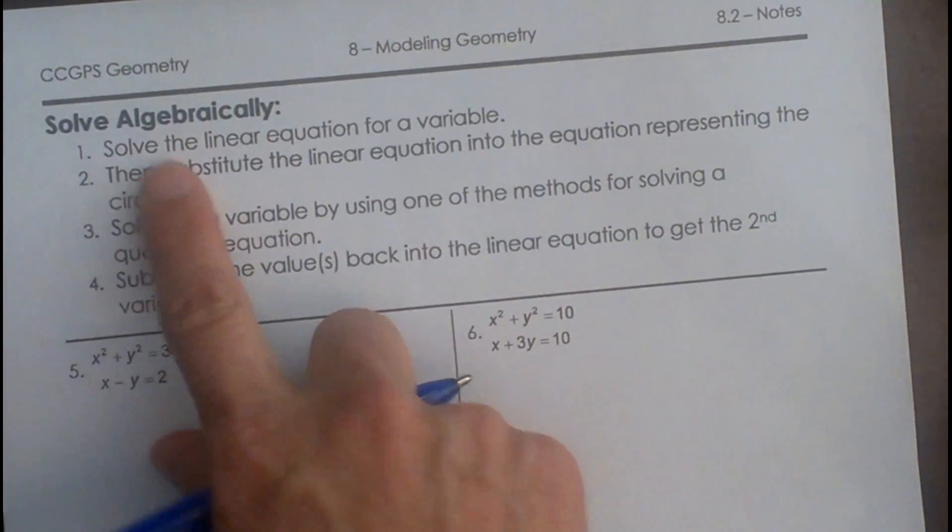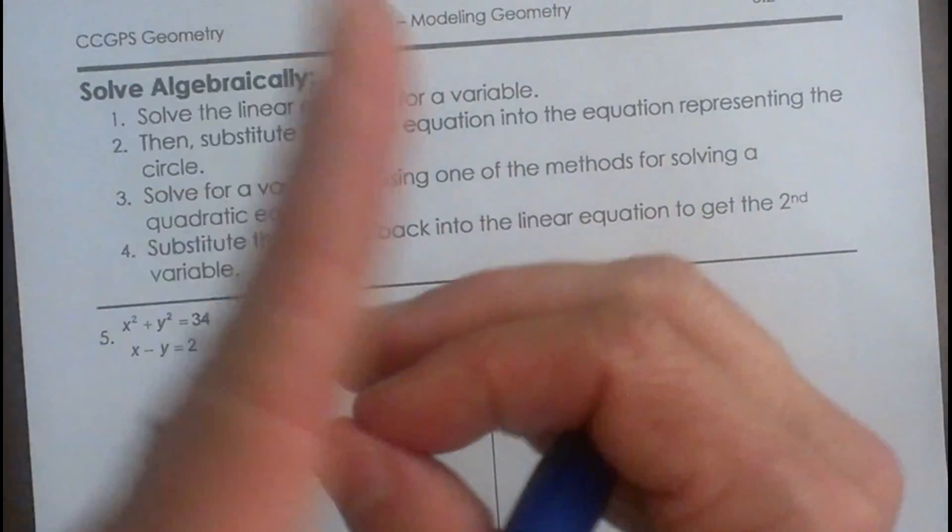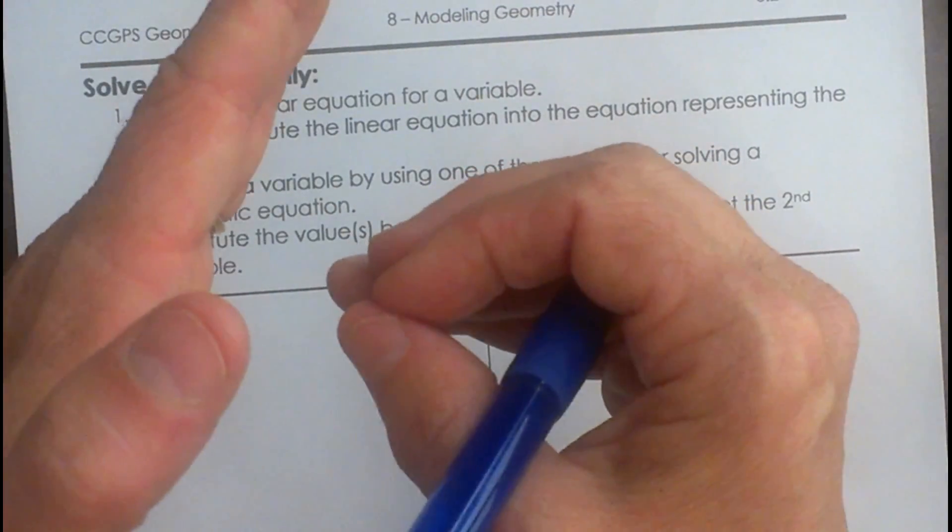Algebraically we're going to solve the system. We have a circle and a line, and they may not cross at all, so there may be no solution.